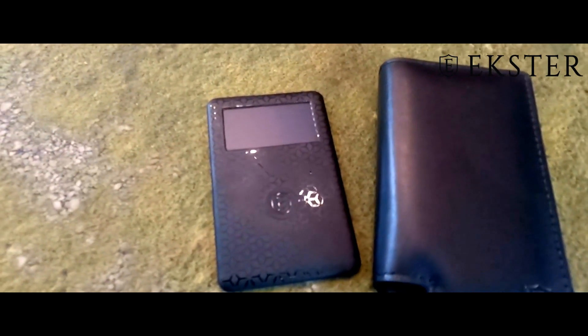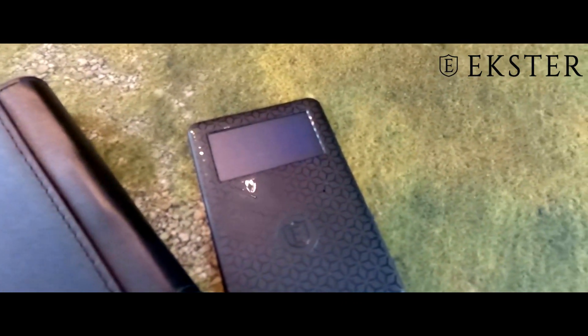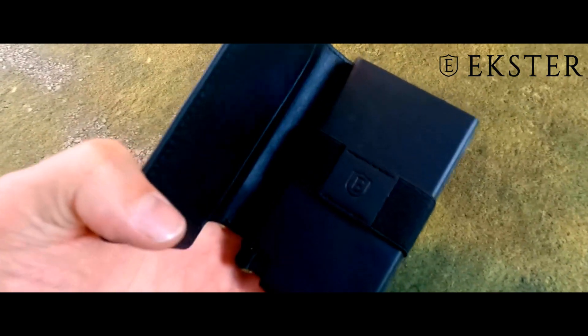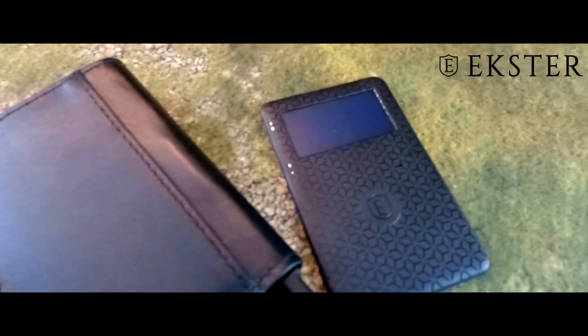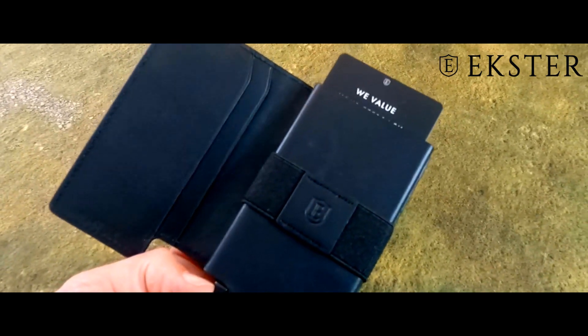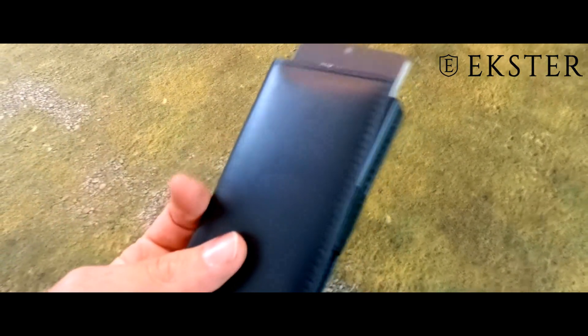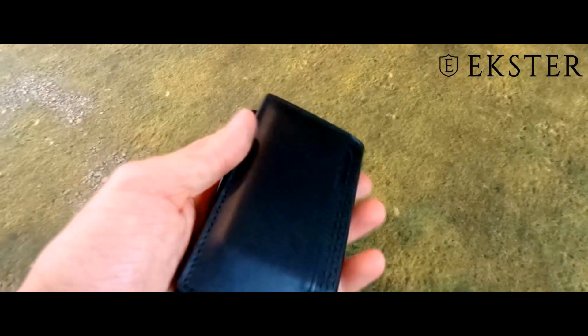But this also brings us to today's sponsor, Ekster. Ekster is a brand new startup company and it wants to bring the smartest wallet to you. The Parliament Wallet is a premium leather smart wallet, perfect for slim storage and quick card access. The built-in aluminum card holder fans out your cards at the click of a button and protects them.